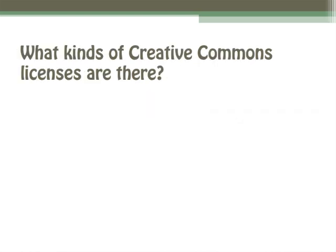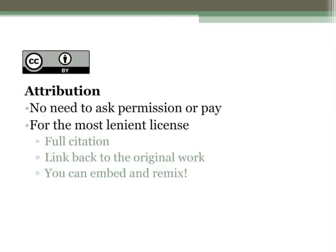Now that you know the pros and cons of open content, I want to talk about Creative Commons licenses themselves. Having a Creative Commons license is the most important and non-negotiable thing that makes something open content. The simplest Creative Commons license is the attribution license — CC BY. Its only requirement is crediting the author. As long as you give credit to the author and link back to the original, you can make copies, share those copies, make derivative works, and share the derivative works. All of the other Creative Commons licenses require attribution, and they add other requirements on top of that.